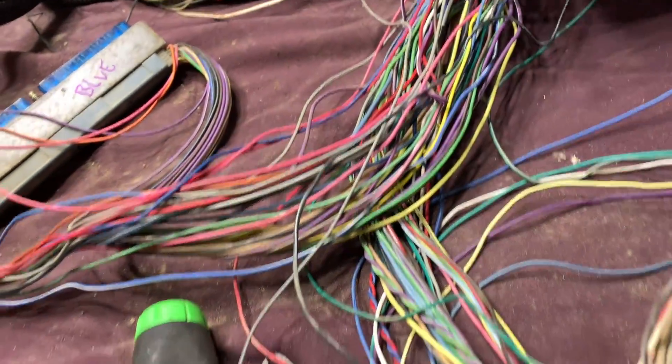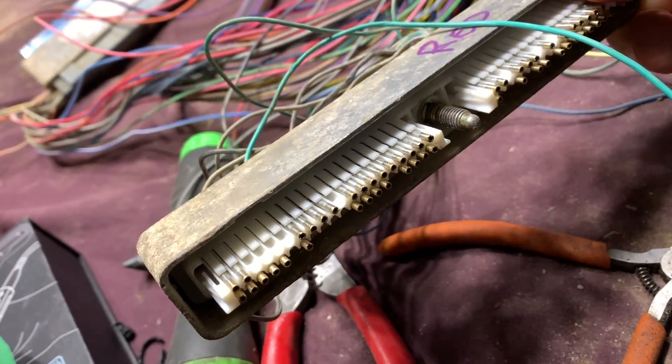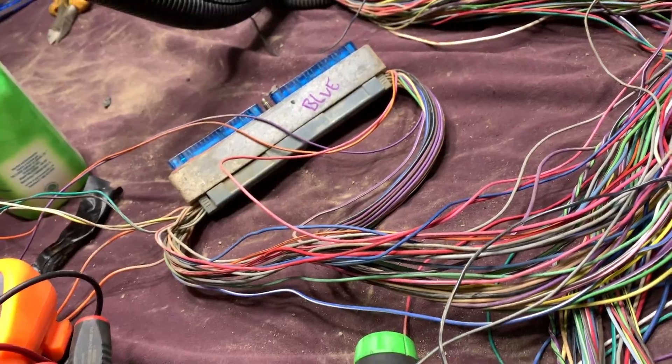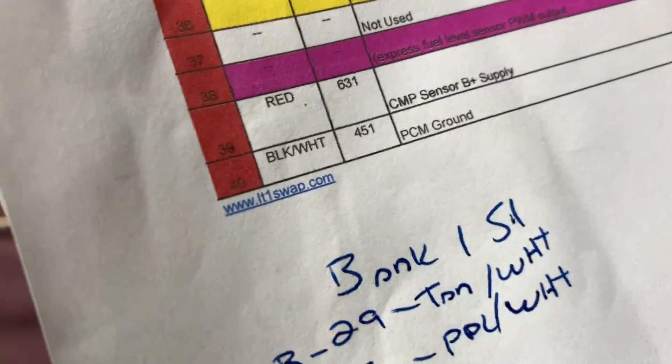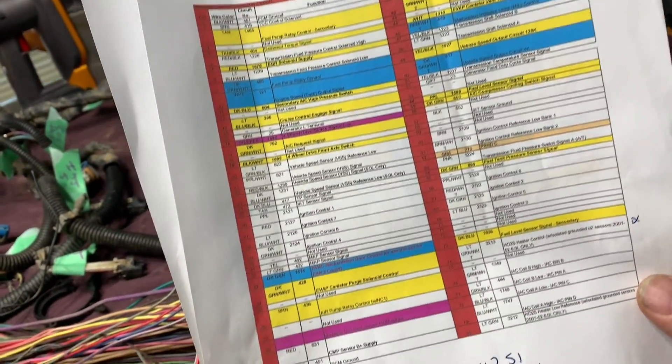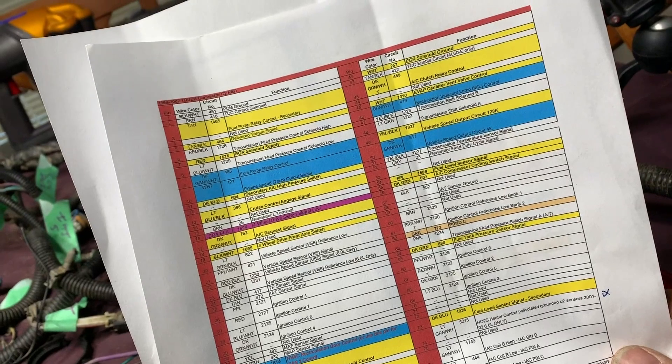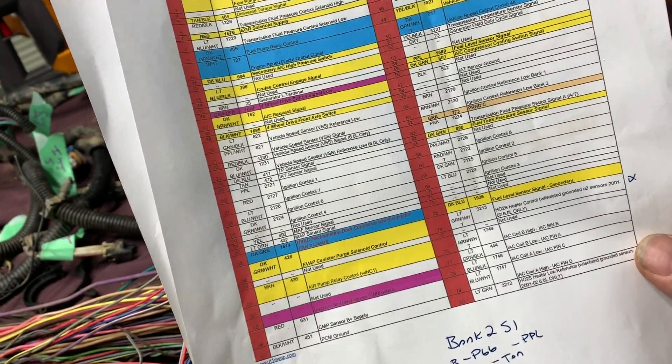Alright, this is where the fun begins. What you want to do is you want to label your connectors because once you pull everything off, you can mix them up. So from lt1swaps.com, right down there, you can print out this sheet. Everything in blue you want to label, everything in yellow you want to remove from this harness right here.